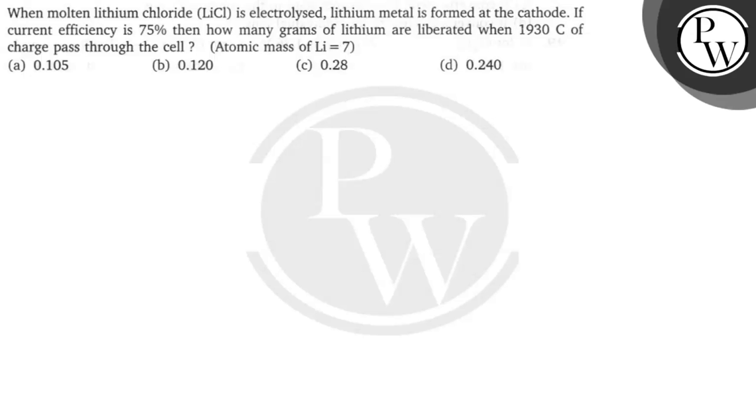Hello bacham, let's see the question. The question says when molten lithium chloride LiCl is electrolyzed, lithium metal is formed at the cathode. If current efficiency is 75%, then how many grams of lithium are liberated when 1930 coulombs of charge pass through the cell?